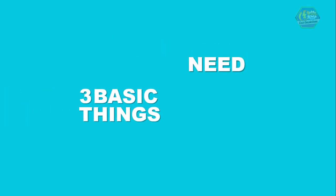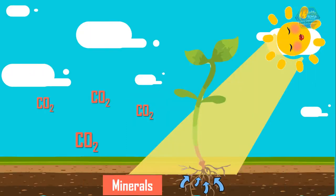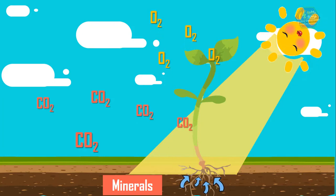Plants need three basic things to live: water, sunlight, and carbon dioxide. Unlike living things like us, plants breathe in carbon dioxide and they breathe out oxygen, which is the opposite of what humans do.